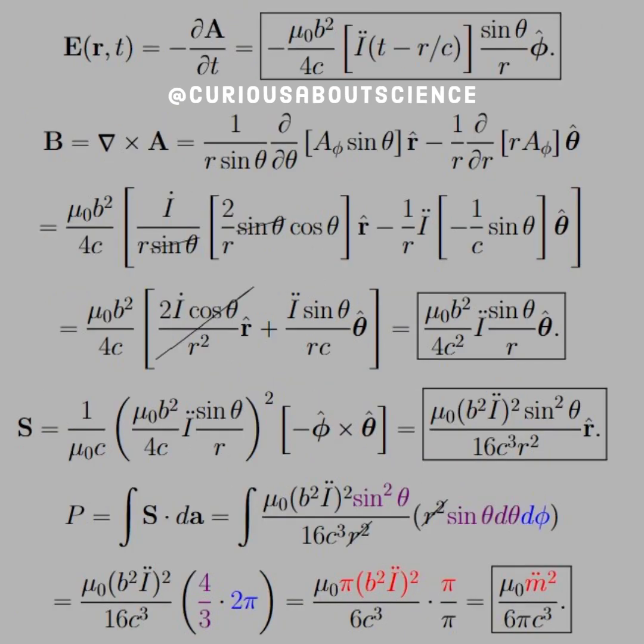Now in order to find the electric field, we just have to take the negative time derivative. Again, the scalar potential is 0, so we take the time derivative of A to find E. Good to go there. That just puts another dot on the current. And again, we have a negative sign.